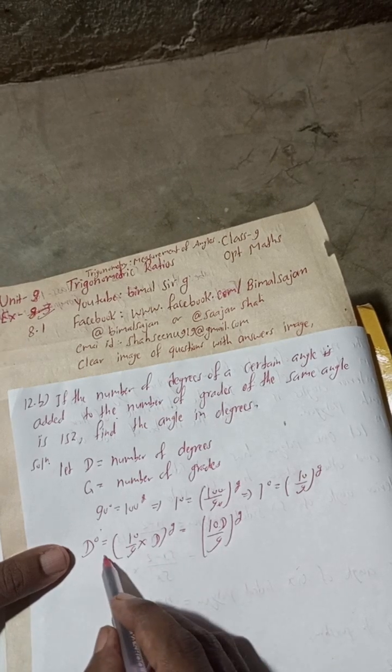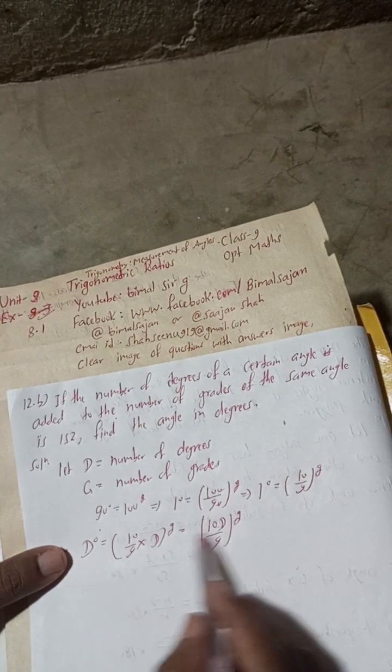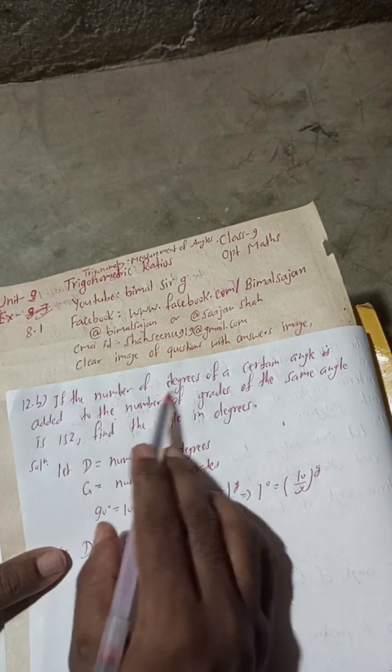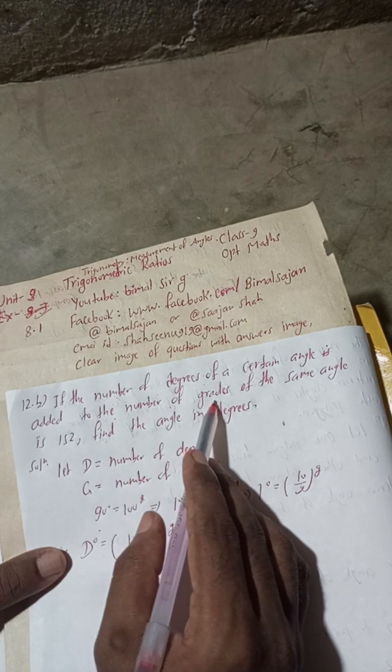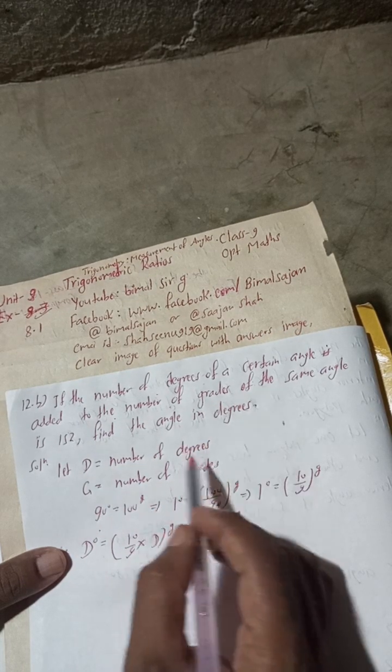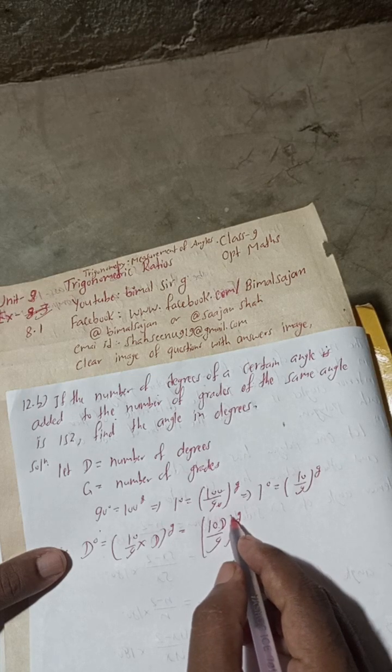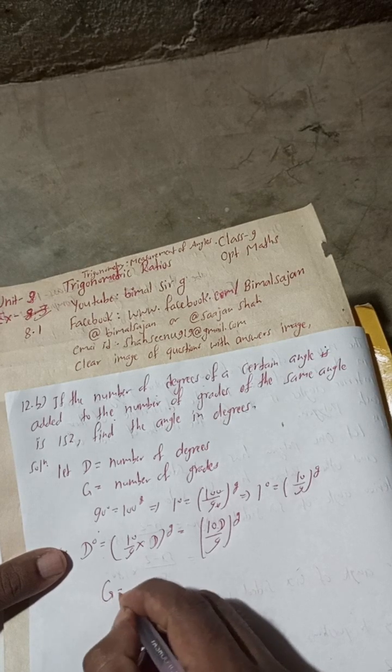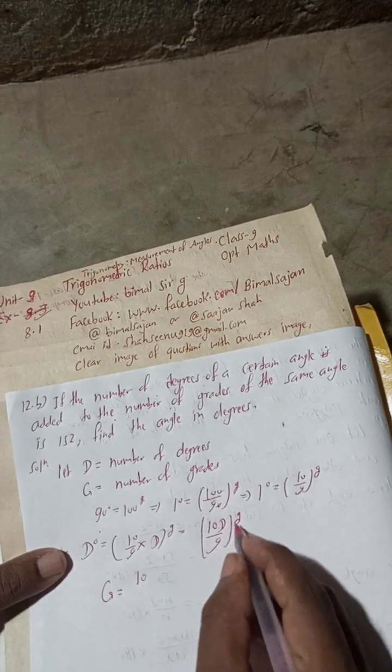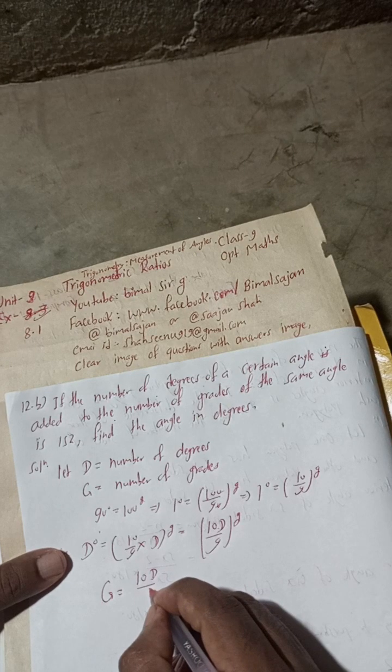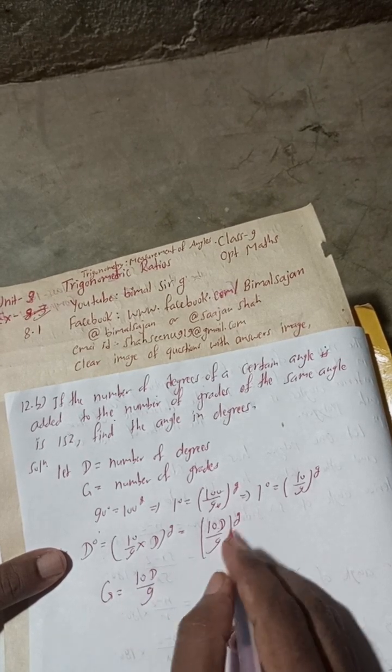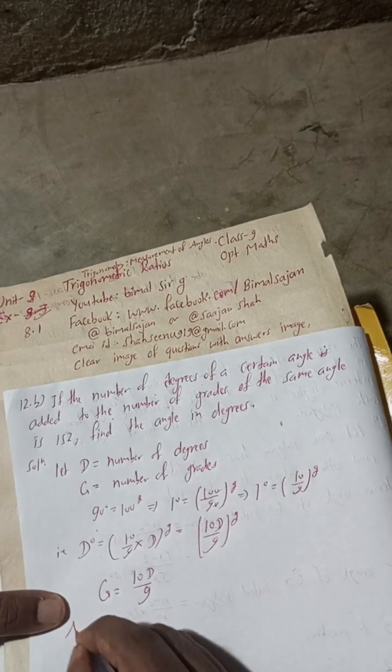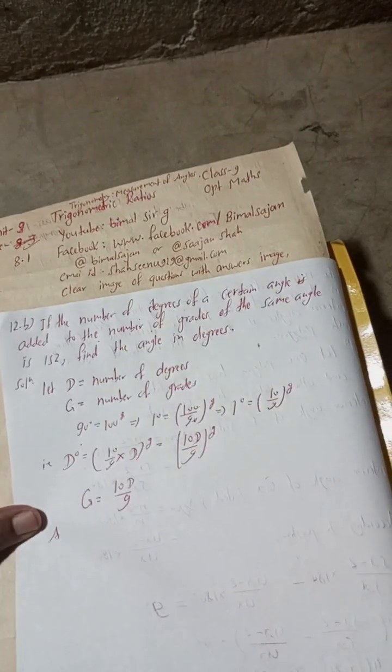We got D degrees equals 10D by 9 grades. The question tells us the number of degrees of the certain angle is added to the number of grades of the same angle. So we can write G equals 10D by 9. Now, according to the question, G plus D equals 152.